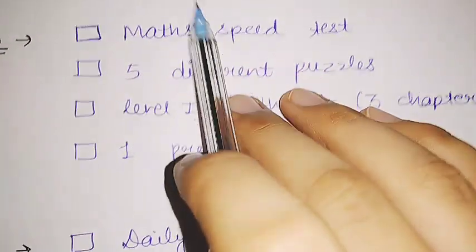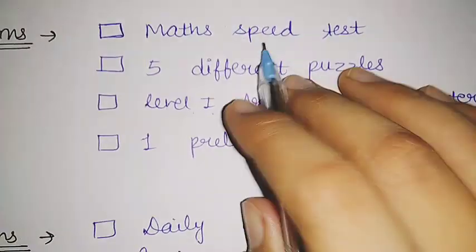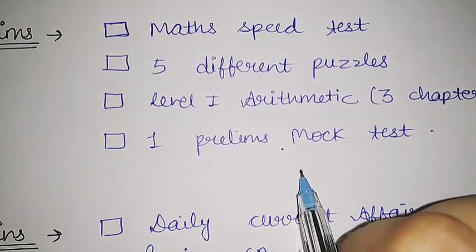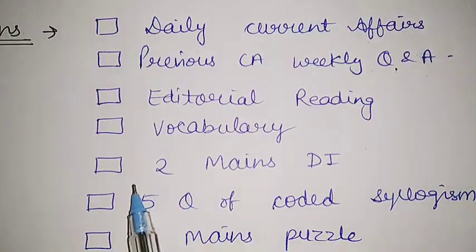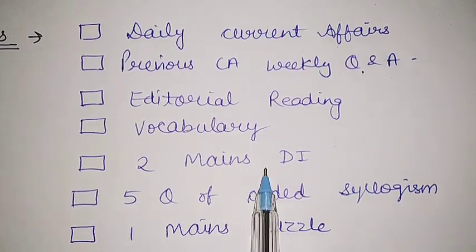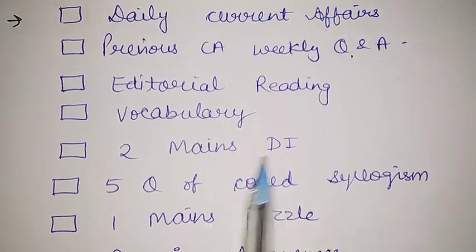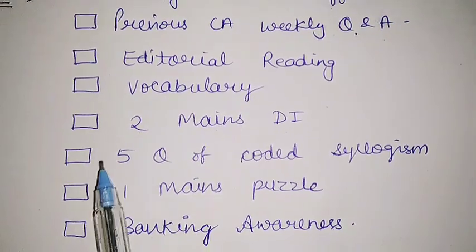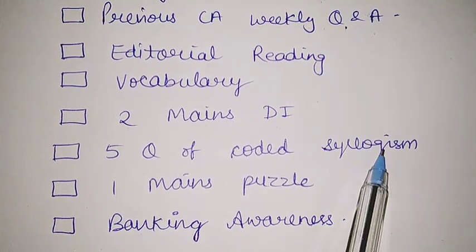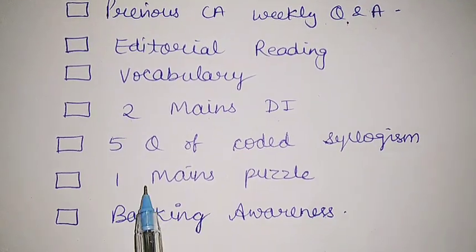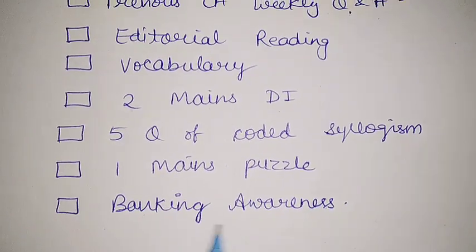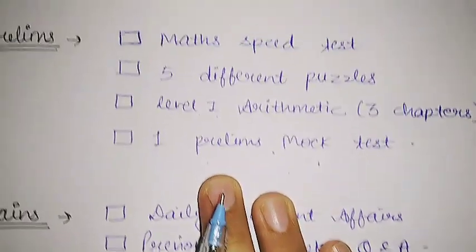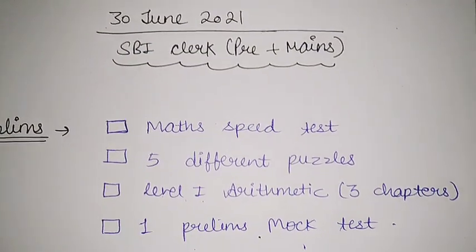One more thing: if your English is weak, try to add two prelims level RC here. Now moving to maths, I will practice two mains DIs, and for mains DI I am using practice mock tests. Then I will practice five questions of coded syllogism for mains level and one mains level puzzle. I will also read banking awareness PDF from Adda. That's all for tomorrow.